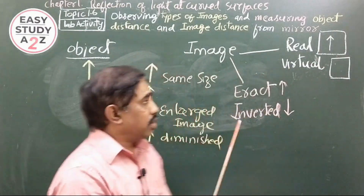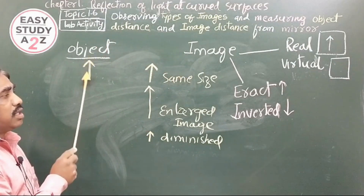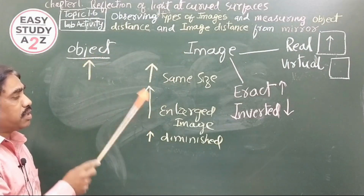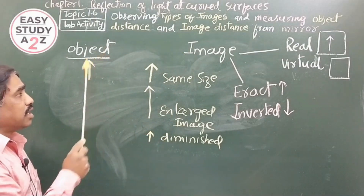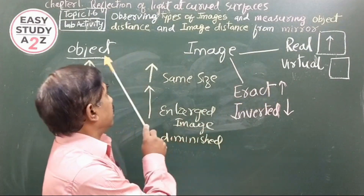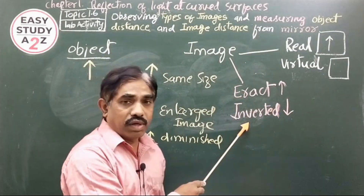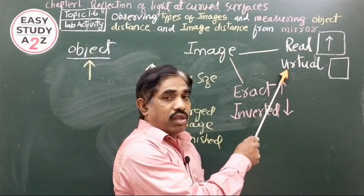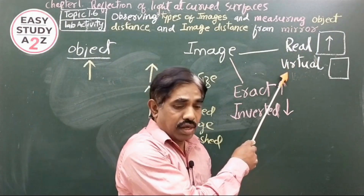In summary: if the size of the image equals the object size, we get a same-size image; if bigger, an enlarged image; if smaller, a diminished image. If the image position is upright, we get an erect image; if flipped, it is inverted. If the image can be caught on a screen, it is real; if not, it is virtual — virtual means not real.